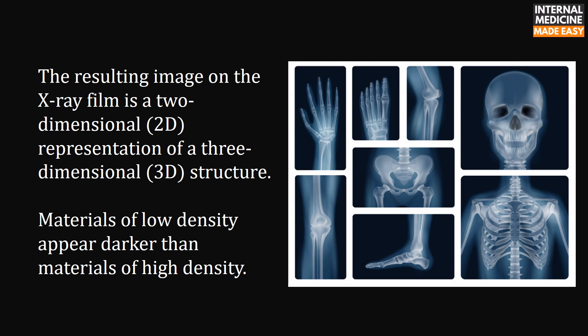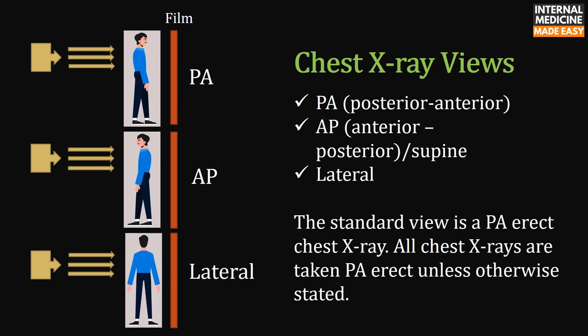The resulting image on the x-ray film is a two-dimensional representation of a three-dimensional structure. Materials of low density appear darker than materials of high density. Some important chest x-ray views are PA view (posterior-anterior), AP view (anterior-posterior or supine view), and lateral view. The standard view is a PA erect chest x-ray — all chest x-rays are taken PA erect unless otherwise stated.